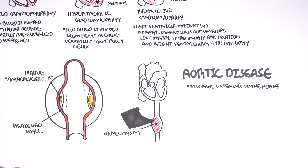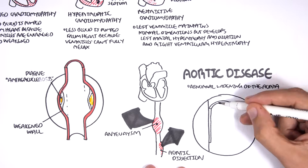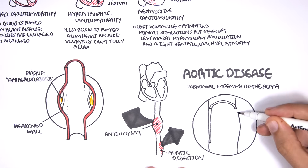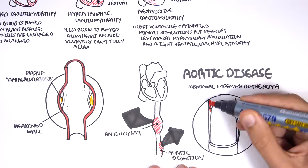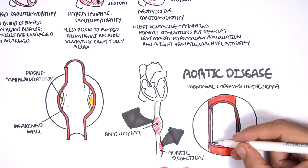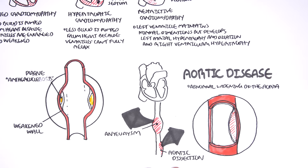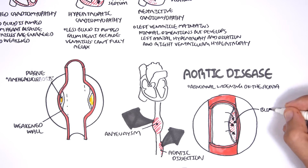Another aortic disease is aortic dissection, when blood fills the walls of the aorta vessel. This is due to some disruption or abnormality in the aortic vessel wall, allowing blood to accumulate between the tunica layers of the aorta.